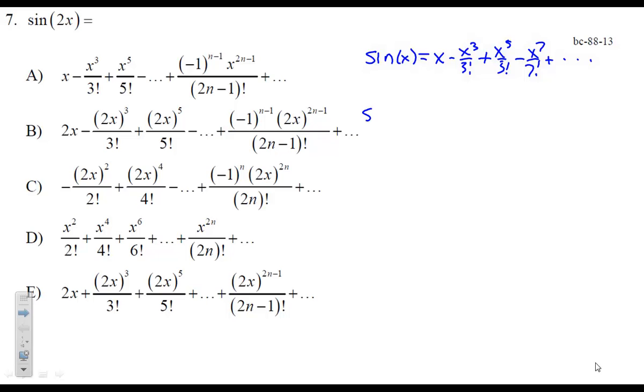Now, if we want to take a look at what the value of sine of 2x is, we'll take every occurrence of x and replace it with 2x. So we'll end up with 2x minus 2x cubed over 3 factorial plus 2x to the 5th over 5 factorial minus 2x to the 7th over 7 factorial.